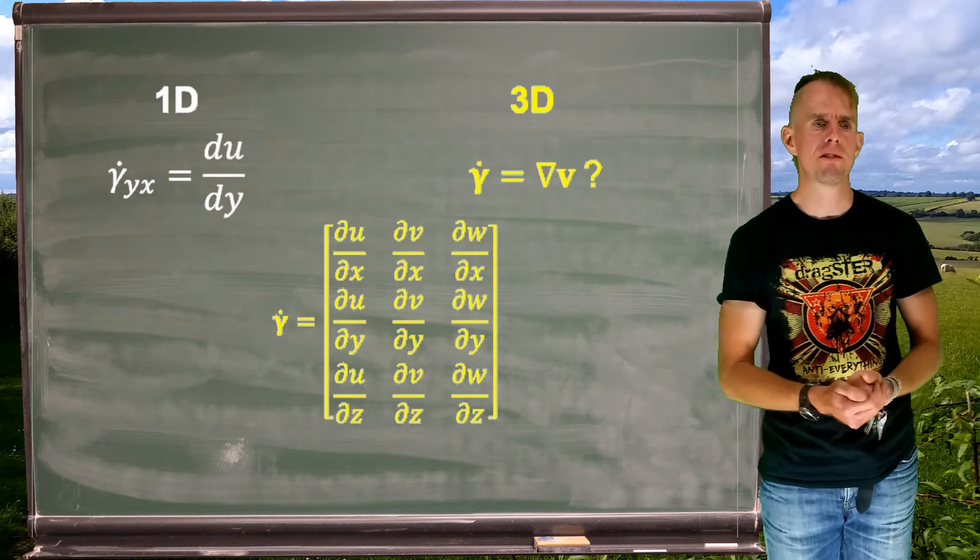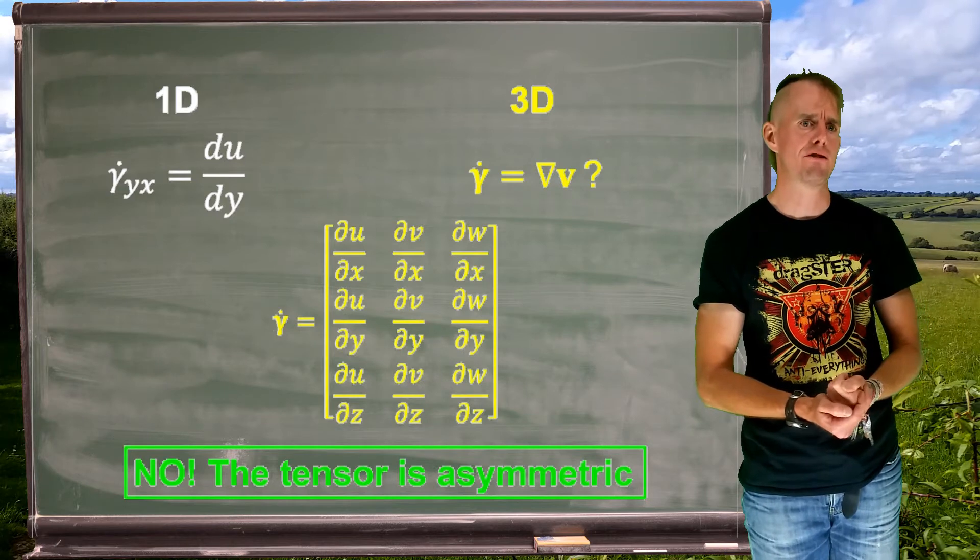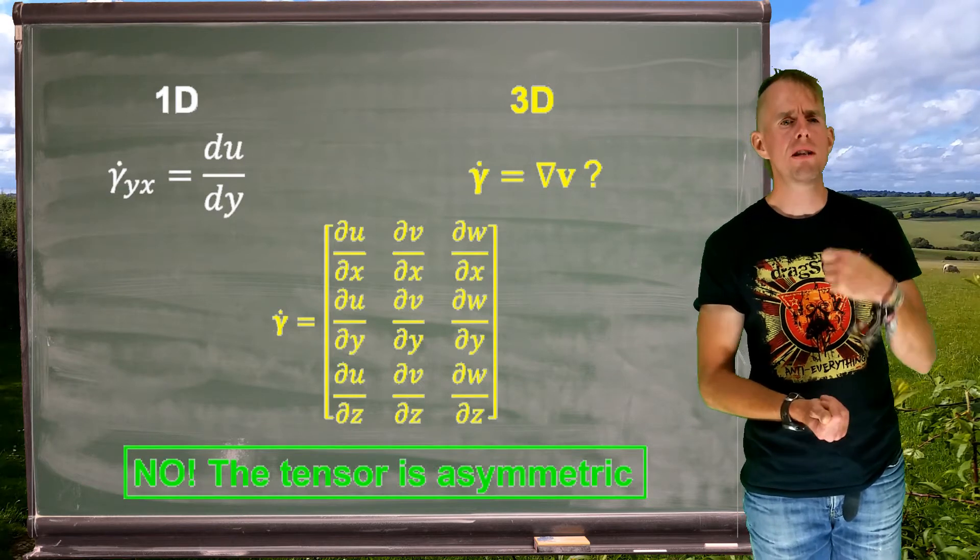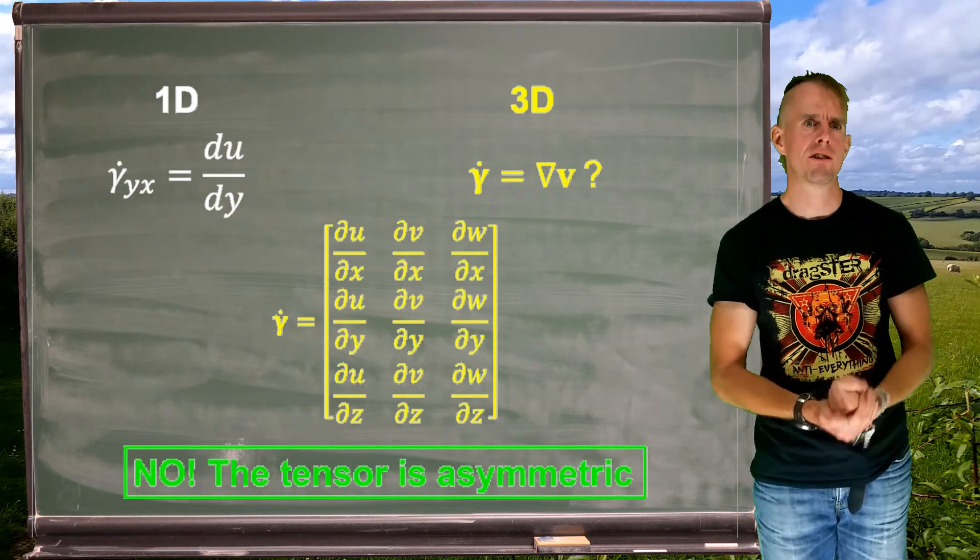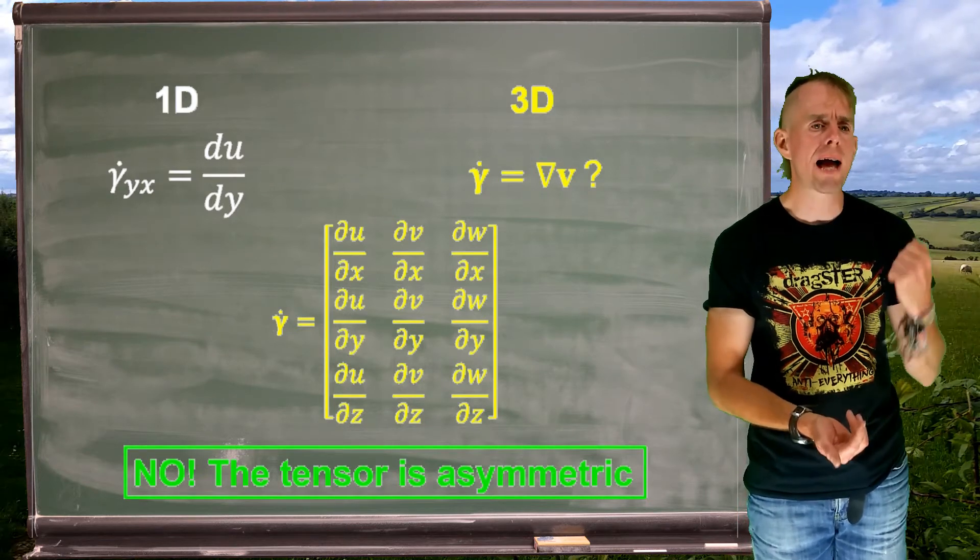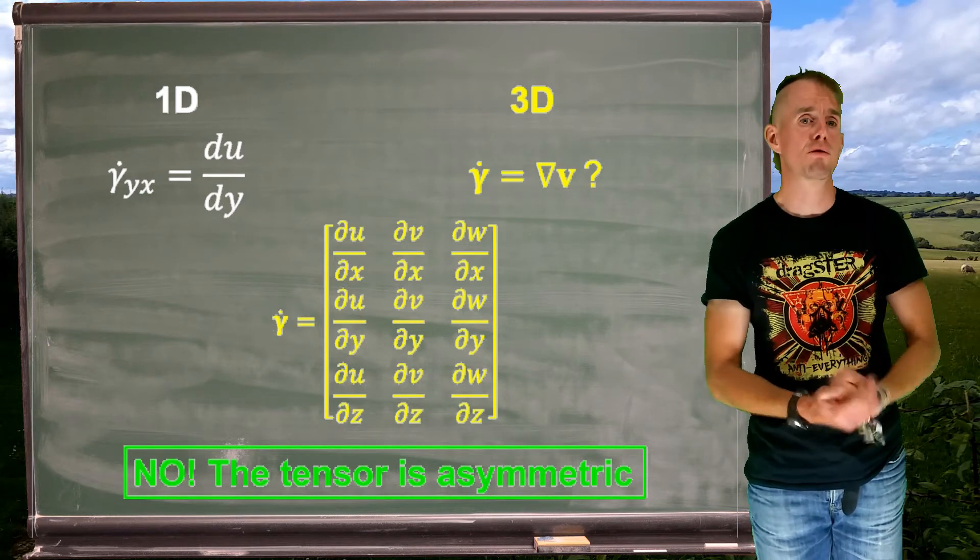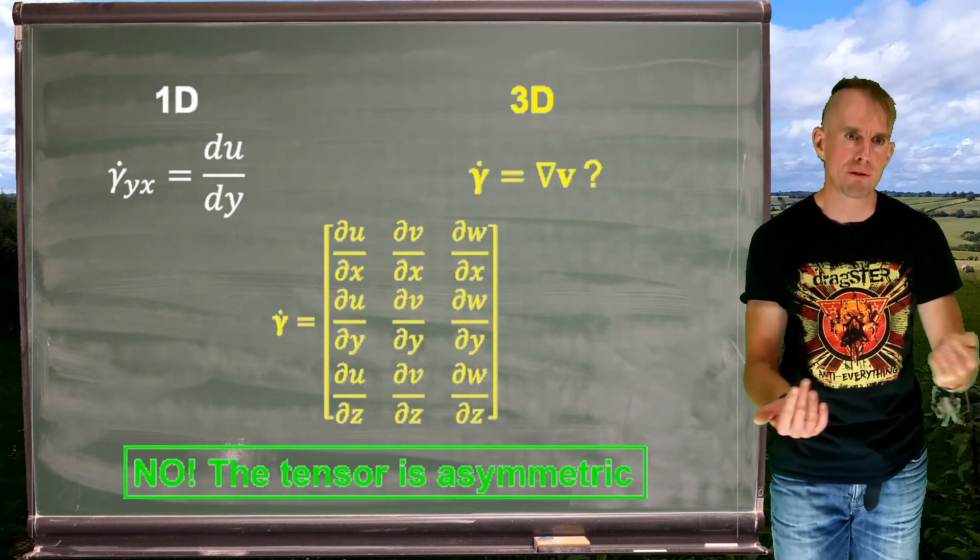However there's a problem, isn't there, because this tensor is asymmetric. And if we're using gamma dot, my rate of strain tensor, to relate to a stress, we have to have a symmetric tensor. So our proposal of gamma dot equals grad v is wrong. Back to the drawing board.